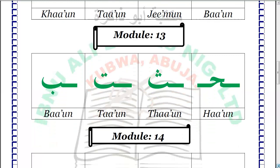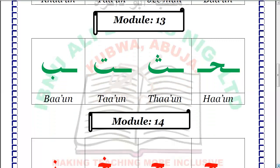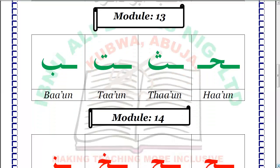Module 13. This is another set of Arabic letters — Arabic alphabets — through which we are going to learn different shapes of Arabic letters. Now I am going to read, so you repeat after me.